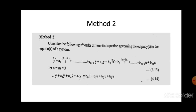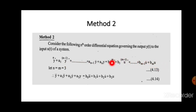We will be given a differential equation governing a system, and that differential equation is in terms of the output y(t). We will get the differential equation as y⁽ⁿ⁾ plus a₁y⁽ⁿ⁻¹⁾ plus ... up to aₙ₋₁y-dot plus aₙy equal to b₀u⁽ᵐ⁾ plus b₁u⁽ᵐ⁻¹⁾ plus etc. In order to reduce the complication, we are taking n equal to m equal to 3.